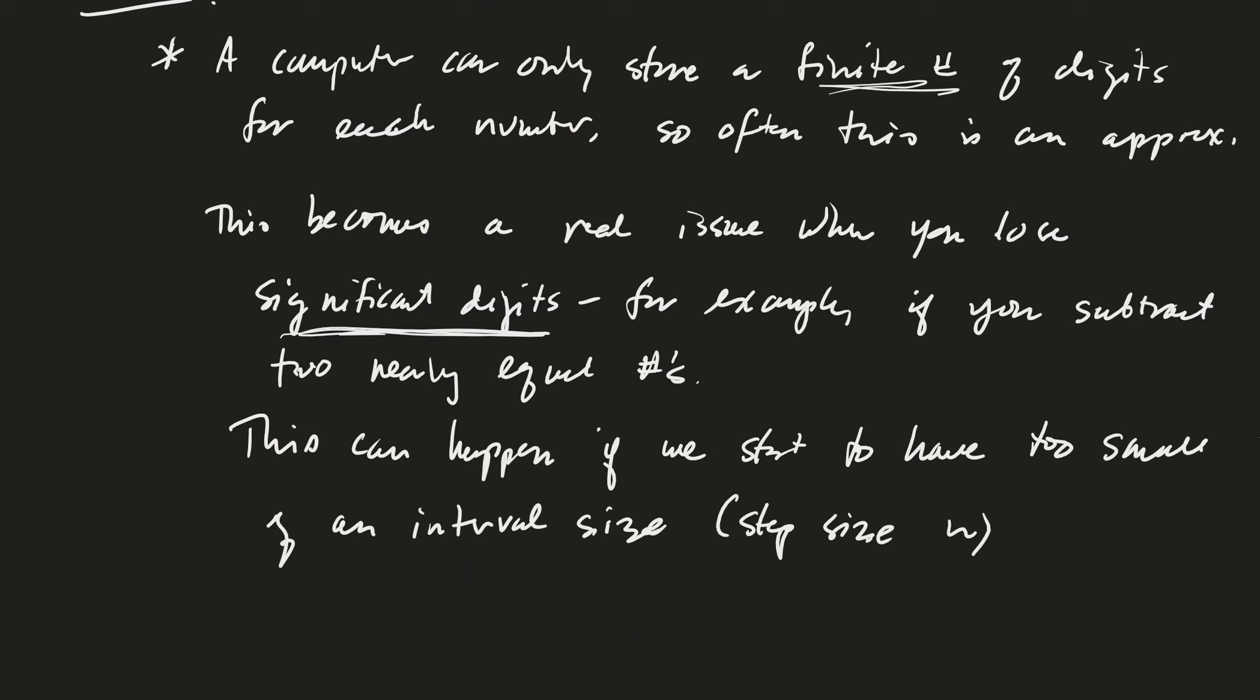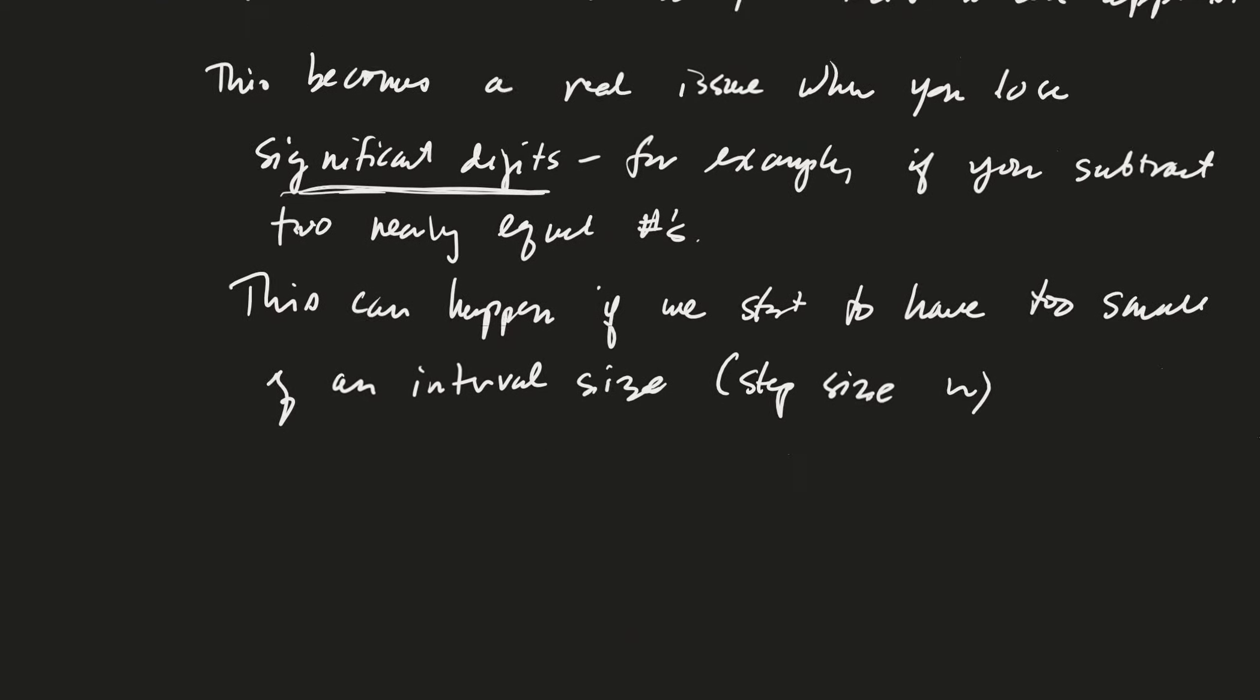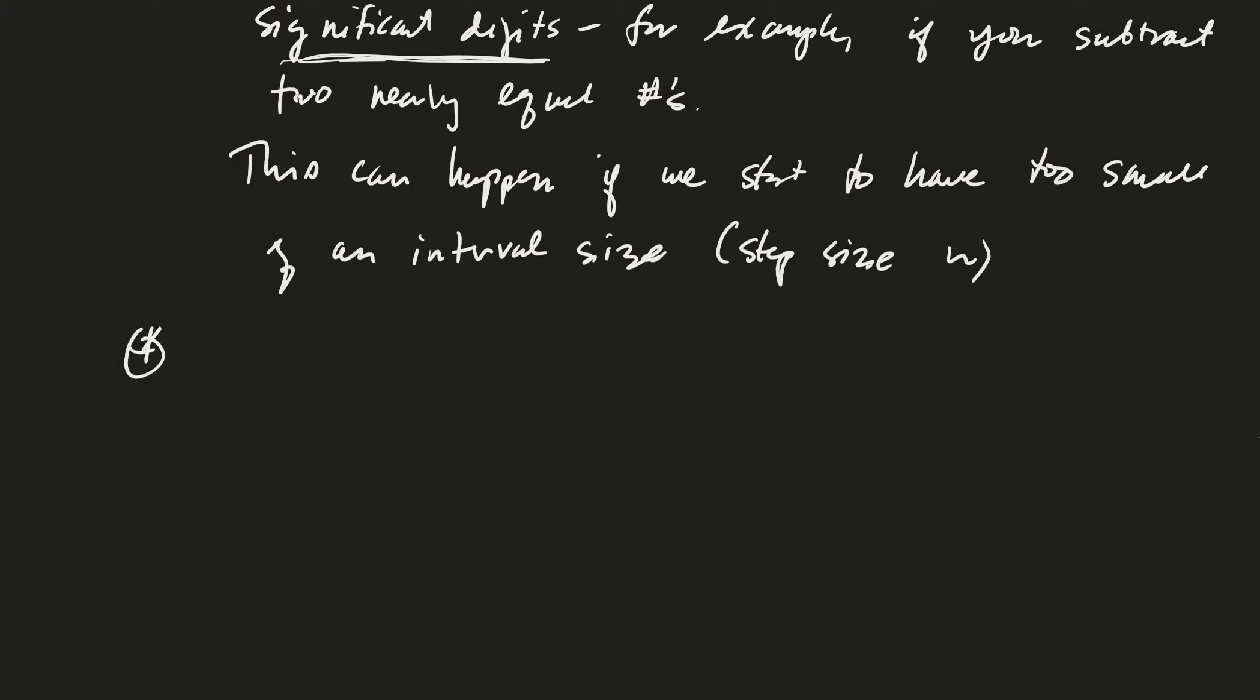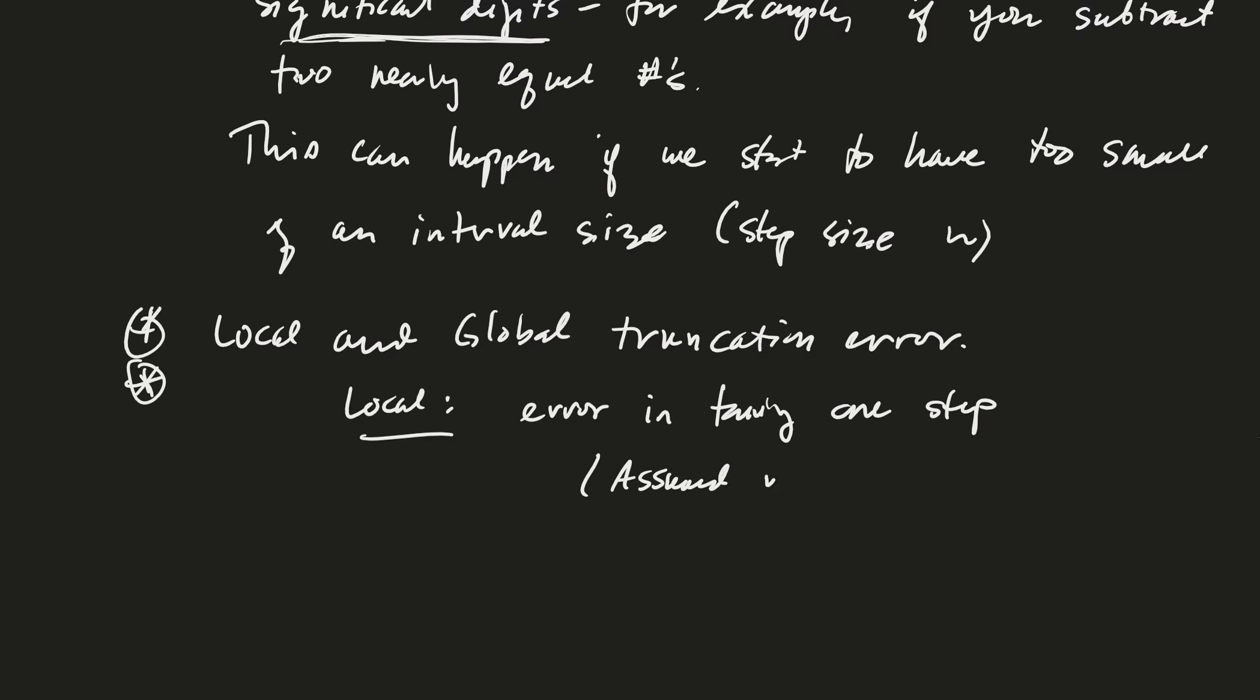Where is the other numerical error coming from? The first source is numerical storage in the computer. The second and third sources are local and global truncation error - error coming from the algorithm itself. Local truncation error is the error in taking one step, assuming you start with zero error.